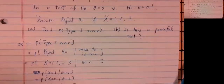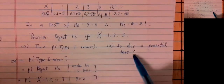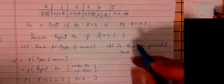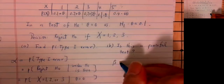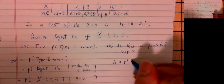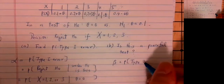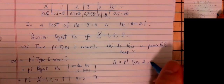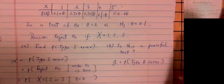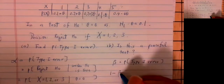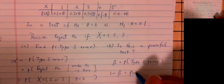Now, is the test powerful? Beta is the probability of making a type 2 error, and 1 minus beta is what we call the power of the test.